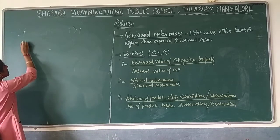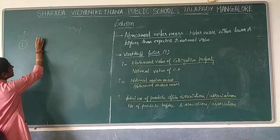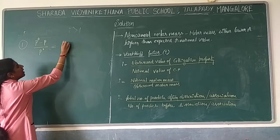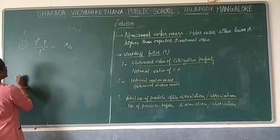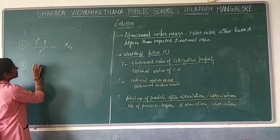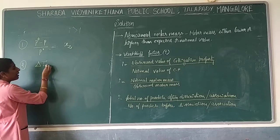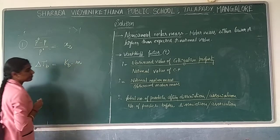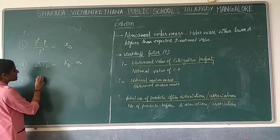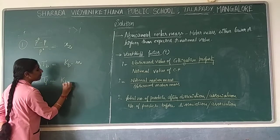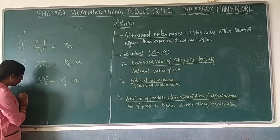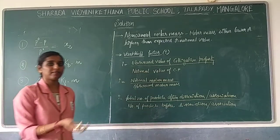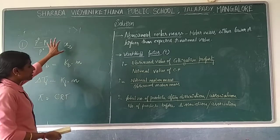For example, the first colligative property relates to the lowering of vapour pressure: the formula is (P° − P) / P° = X₂. For elevation in boiling point: ΔTb = Kb × m. For depression in freezing point: ΔTf = Kf × m. And for osmotic pressure: π = CRT. These are the main formulas for colligative properties.